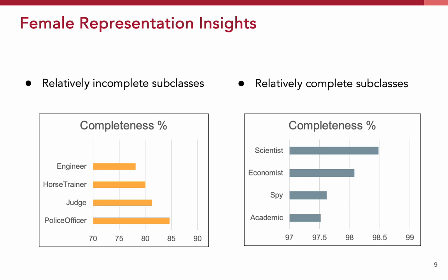Let me share interesting insights from our research. On the left side of the slide, we observe subclasses where female representation remains relatively incomplete. For example, in professions like engineering, horse training, judging, and policing, the completeness percentages range between 70% and 85%. These figures indicate significant gaps where female achievements and presence are underrepresented.